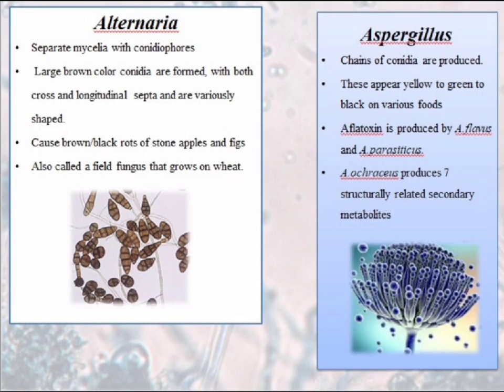First, let's start with Alternaria. Separate mycelia with conidiophores are found in this case. Large brown-coloured conidia are formed with both cross and longitudinal septa and are variously shaped. They cause brown to black rots of stone fruits, apples and figs. They are also called field fungus that grows on wheat.